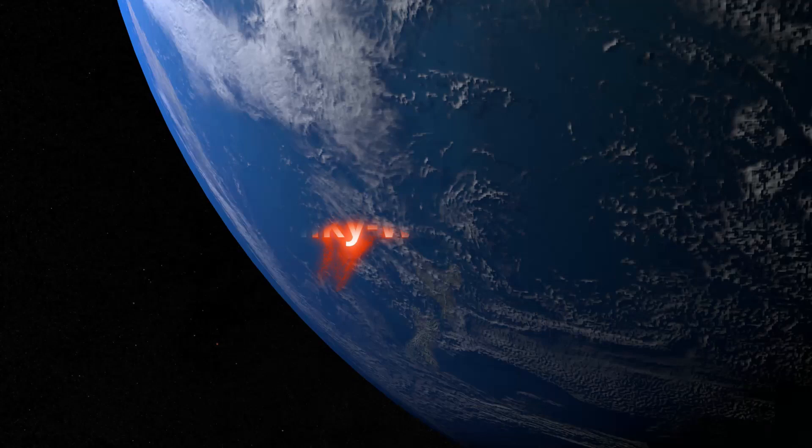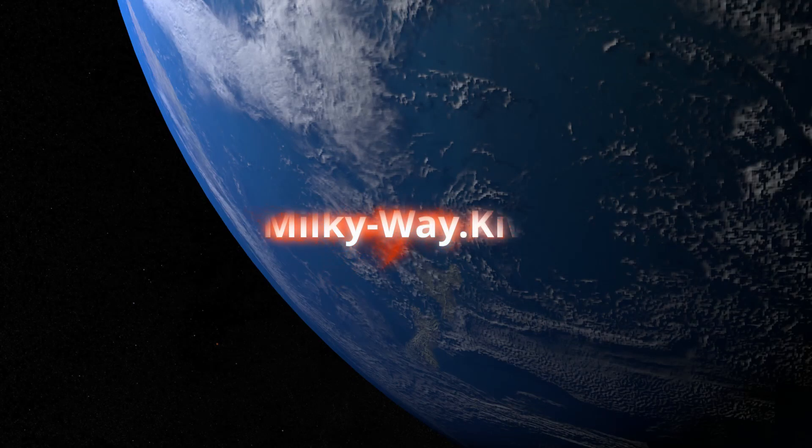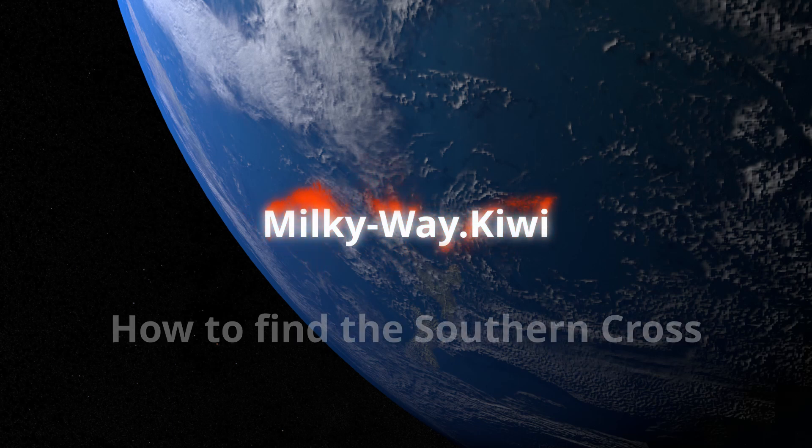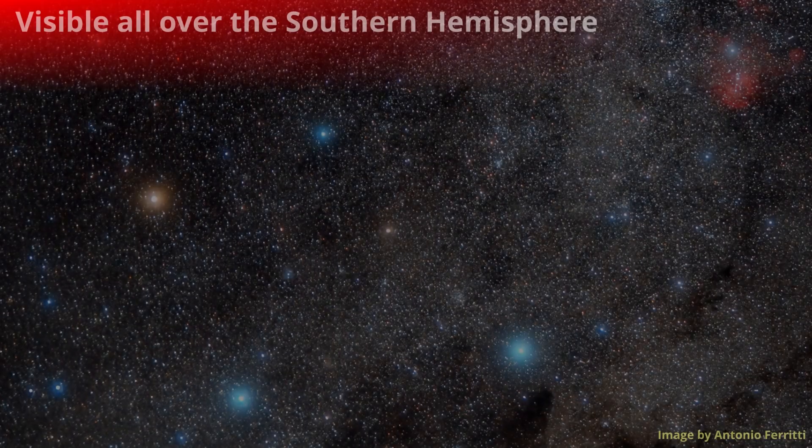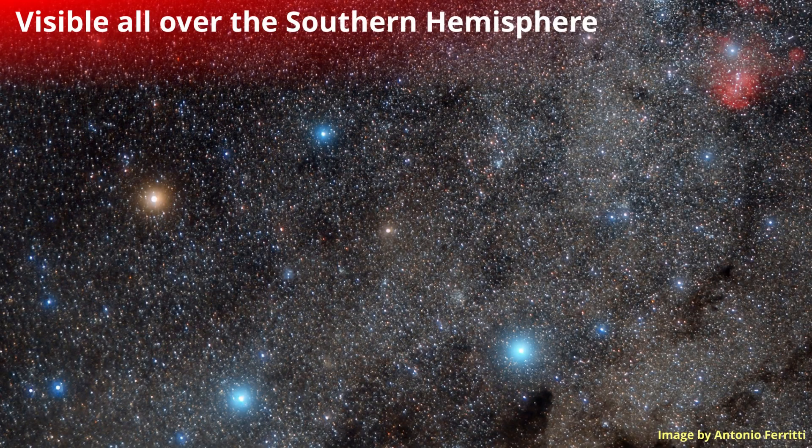Welcome to Milky Way Kiwi and how to find the Southern Cross. The Southern Cross, or Crux, is a very important constellation in the Southern Hemisphere as it's visible from all over the Southern Hemisphere and up to 25 degrees north of the equator.